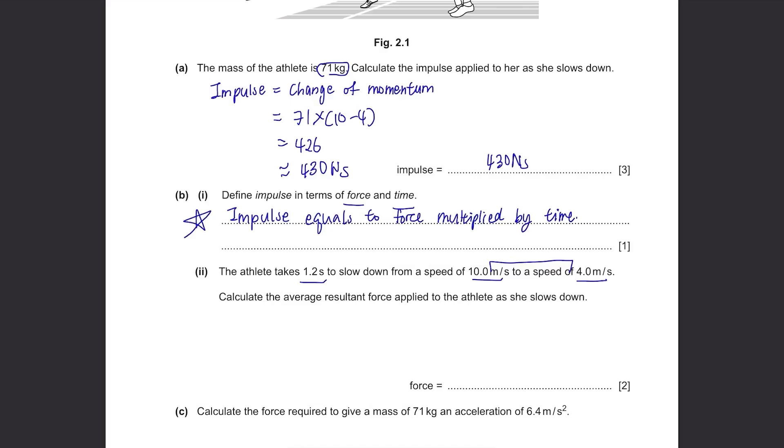So we write this again. But this time, since we need to find the resultant force, let's write it as force equals impulse over time. Just rearrange the equation. So impulse, we've calculated it, it's 430, so 430 divided by time, it's 1.2 seconds. We don't even have to use this change in speed. When you calculate this, you get 358.33 and so on. Round it up to 2 significant figures. It's 360 newtons.